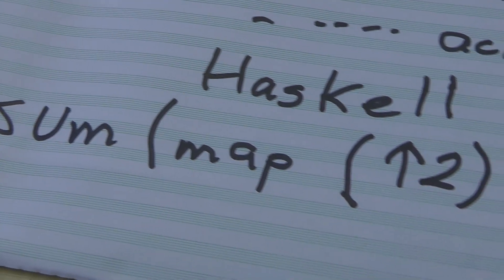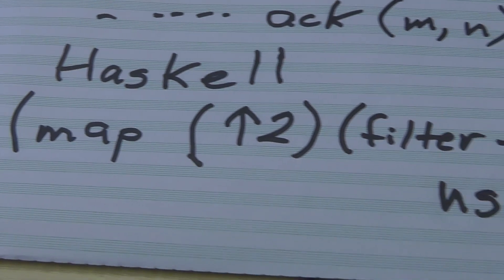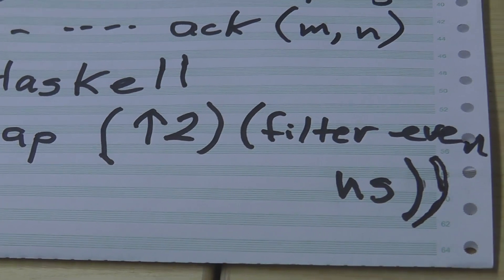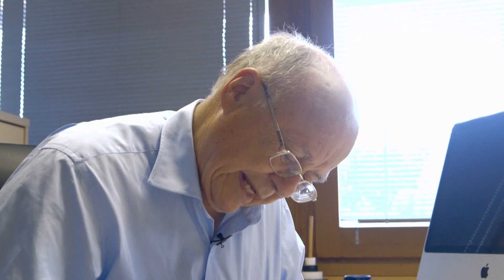In Haskell, here's what you do — it's incredible. You just say: sum, map (^2) — that's in brackets — filter even, ns. Now ns is your array, your list of mixed integer numbers, some of which are even, some of which are odd. Let's read this from right to left — it makes life so much easier.